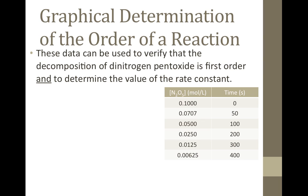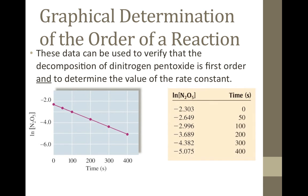Using this example from a previous video, we can graphically verify that it is first order and determine the value of the rate constant using our understanding of the first order integrated rate law. If we plotted the raw concentration data and saw a linear plot, it would not be first order — that would mean it is zero order. But if we take the natural log of the concentration and plot that versus time, we see a linear plot. That verifies this is first order with respect to dinitrogen pentoxide. If we determine the slope of this line, we can change its sign and get the value of the rate constant — a great way to determine rate constants from experimental data.